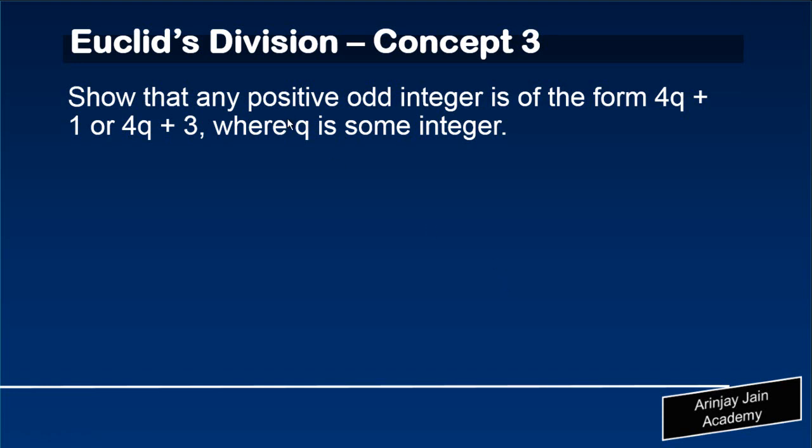Show that any positive odd integer is of the form 4q plus 1 or 4q plus 3, where q is some integer.